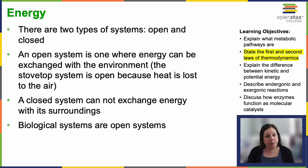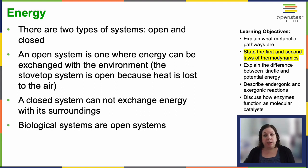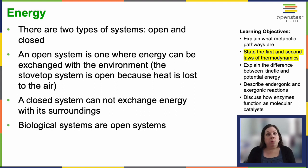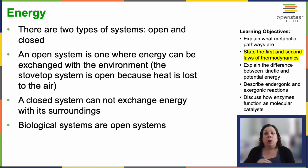Systems can be open, exchanging energy with the surroundings, or closed, so there's no exchange between your system and the surroundings. Biological organisms are considered open systems. We interact with our surroundings by using energy from the sun for photosynthesis, consuming energy-storing molecules like eating, and then releasing energy into the environment — in forms ranging from heat to when we die and degrade. These processes all adhere to the laws of thermodynamics, which govern energy transfer in all systems.